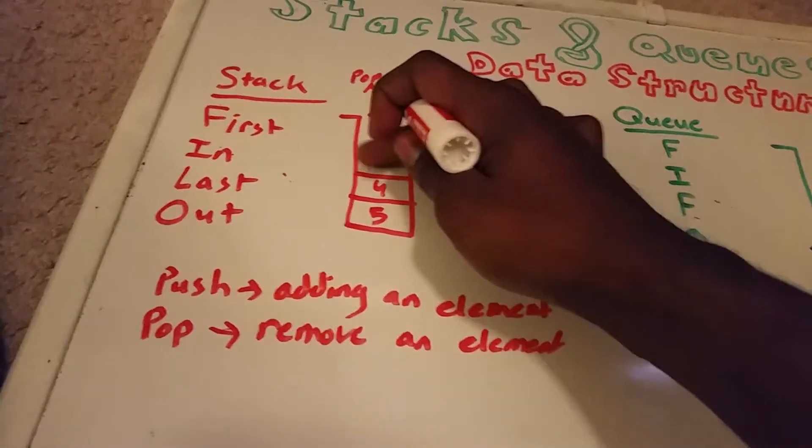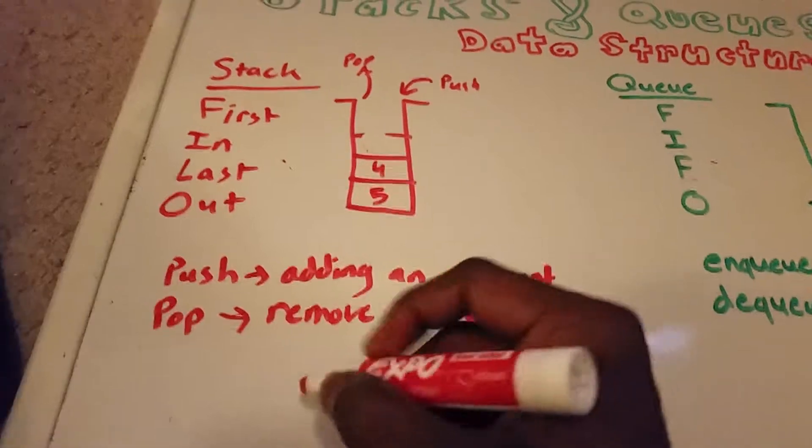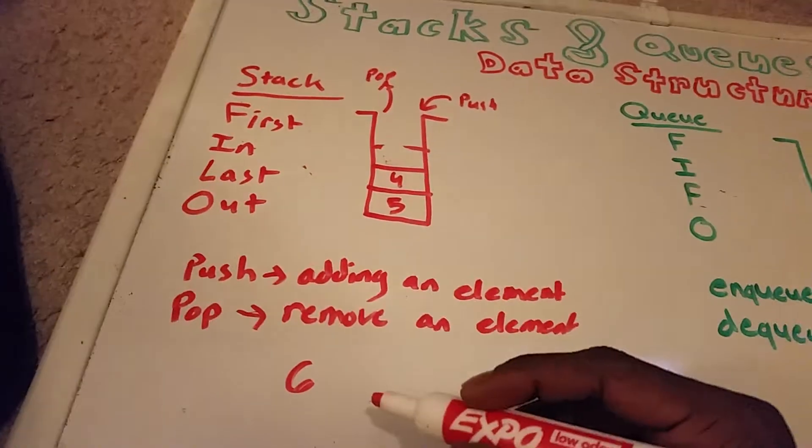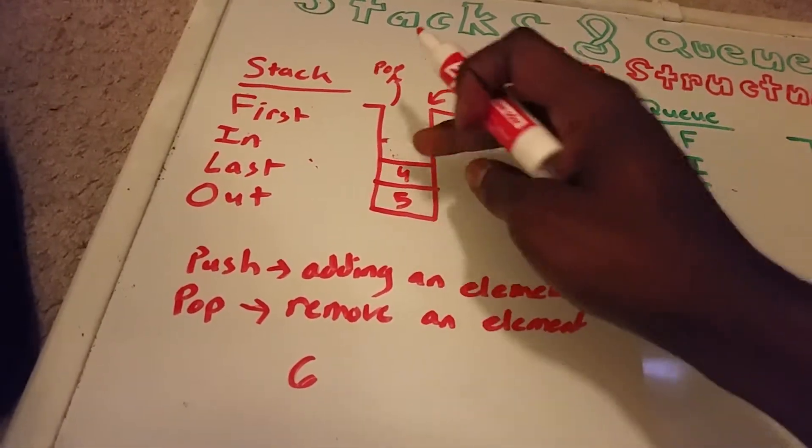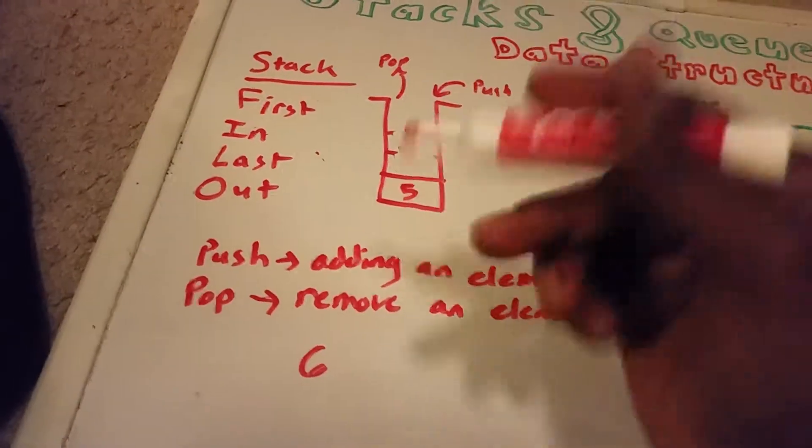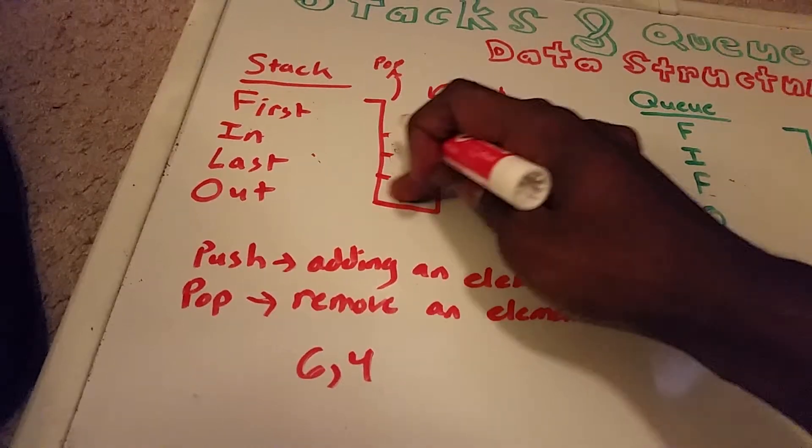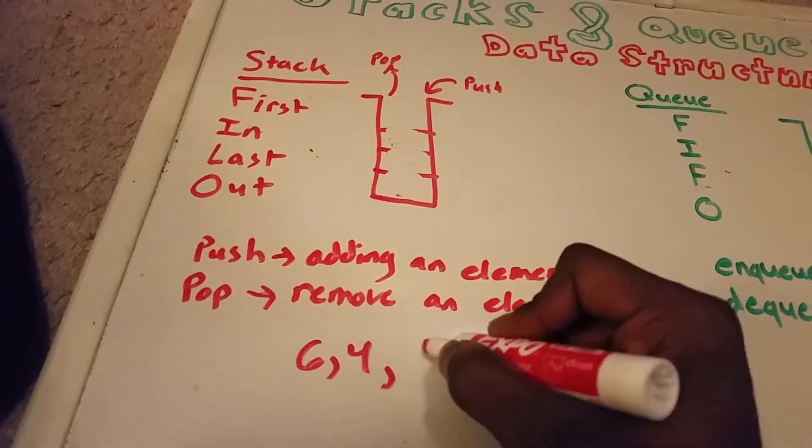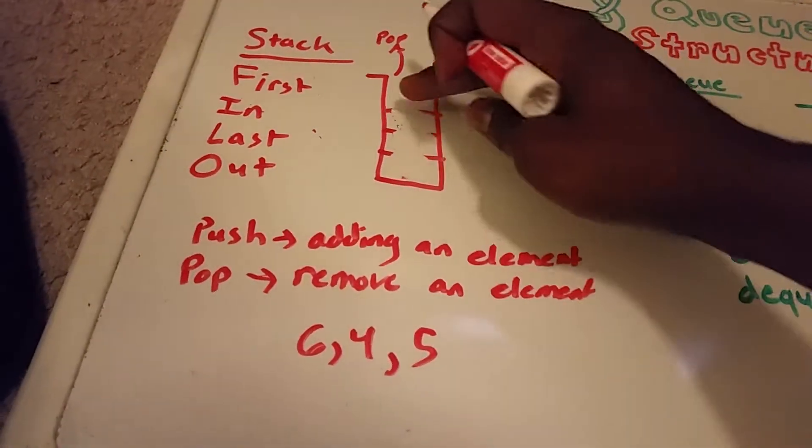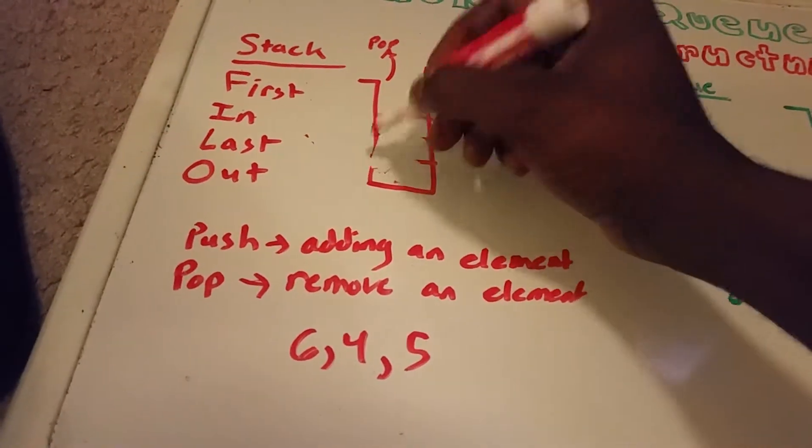So we pop it, it gets removed, and we would put down something like 6. If I pop the element out of the stack again, the next element will be 4, and we can put it down here. And I do one more pop and we get our element 5. And now our stack is empty.